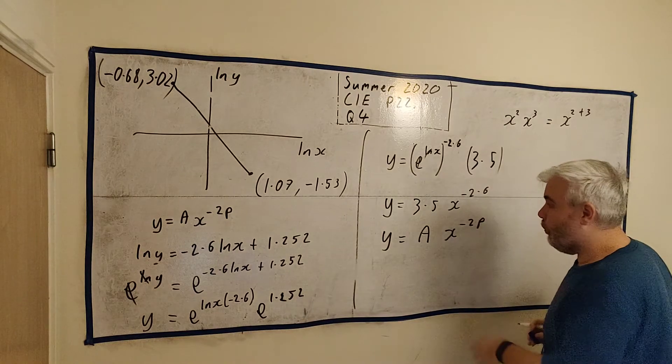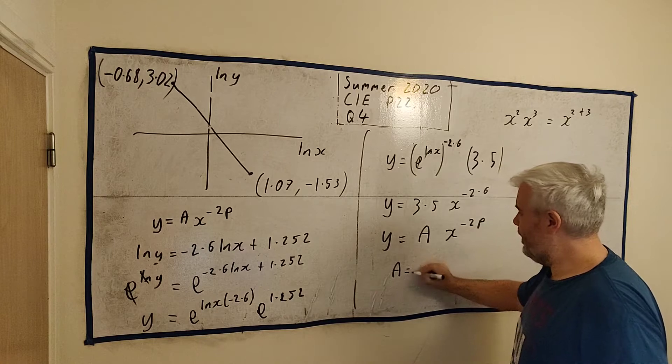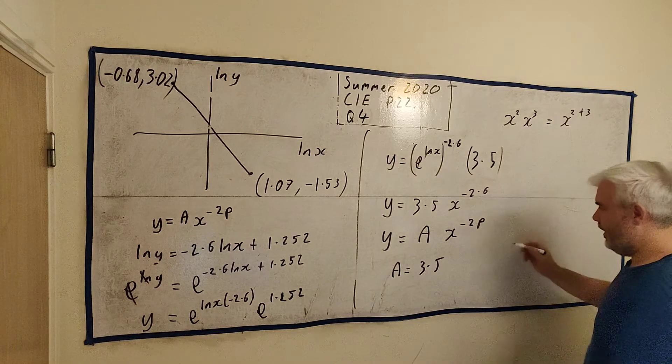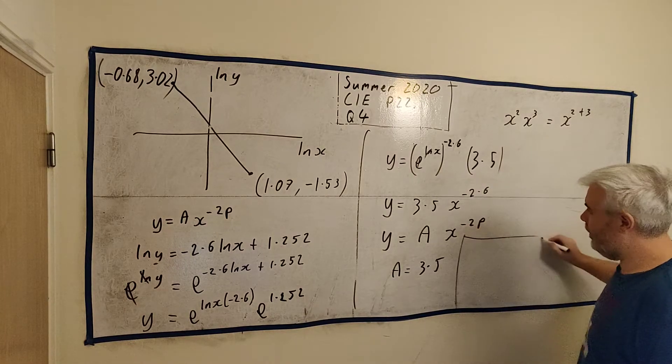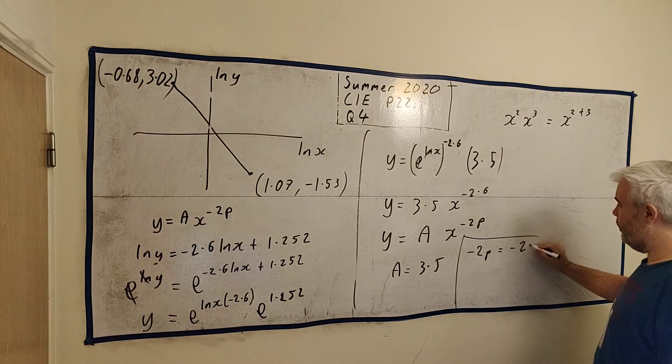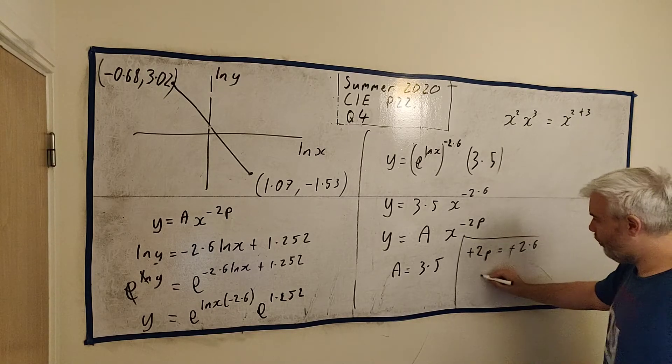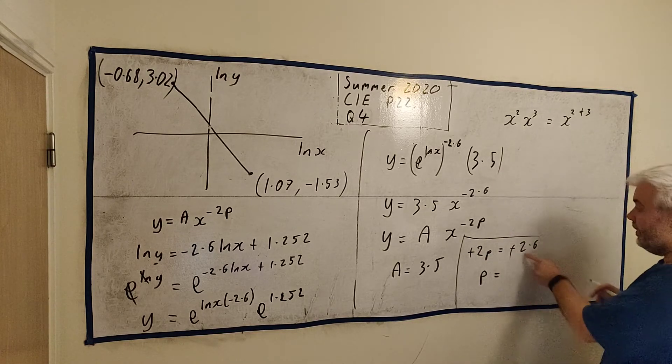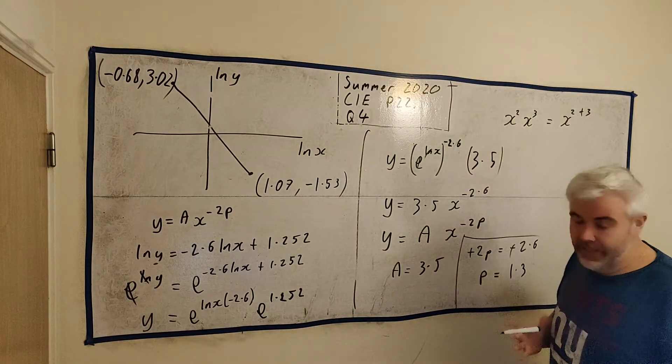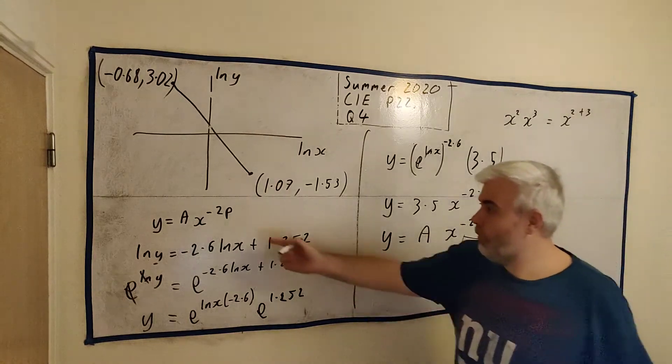y is equal to a x to minus 2p. These are very similar. We can just, by observation, we can say, well, a is equal 3.5. We can say a little more difficult this one. We can say, let me put it here, minus 2p is equal to minus 2.6. 2 minuses cancel. Divide both by 2. So p gets this divided by 2, 1.3. So that's our two numbers. They ask us to find a and p. This is a. This is p. They go into this equation.